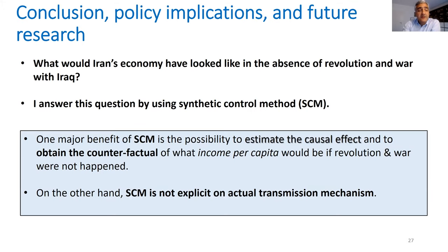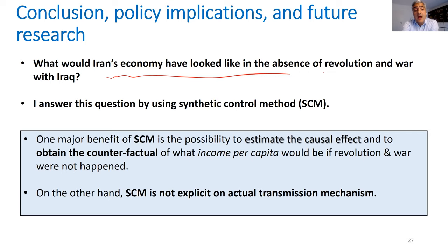To summarize: the question was what would the Iranian economy have looked like in the absence of the revolution and war. The synthetic control method answers this question transparently, helping us estimate the causal effects of the war and giving us a counterfactual for the Iranian economy had this revolution and war not happened. One limitation is that the synthetic control method does not show us the transmission mechanism — why Iran's income so massively reduced compared to its counterfactual. That mechanism needs more analysis.